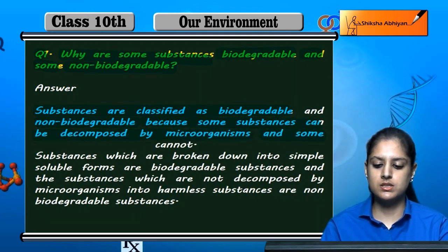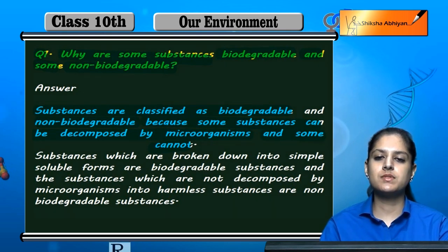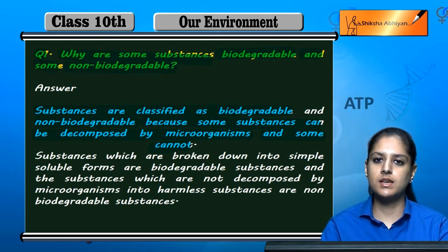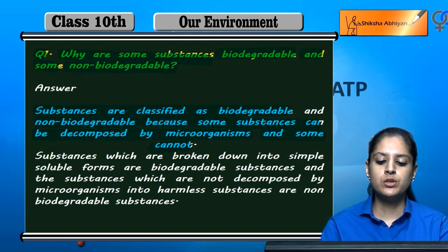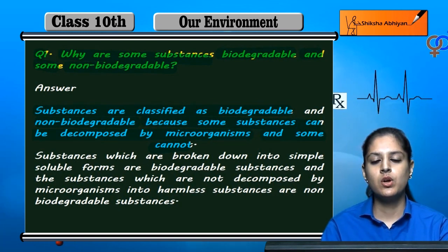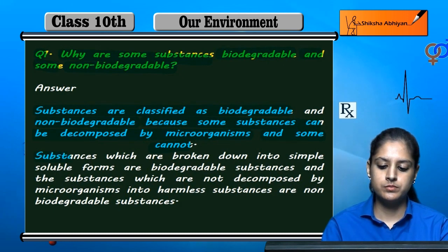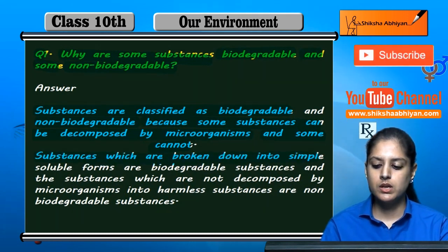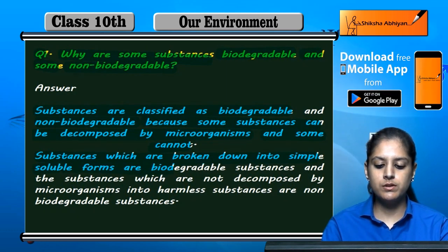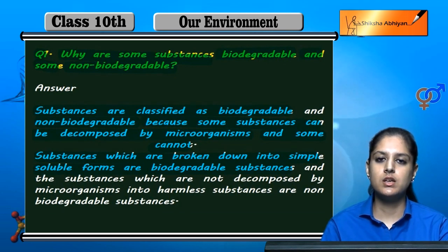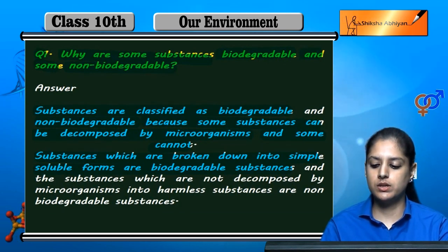Some substances, over a period of time, can be decomposed by microorganisms. Those substances that can be broken down into simple soluble forms are called biodegradable substances. Substances which decompose into simple forms are biodegradable.